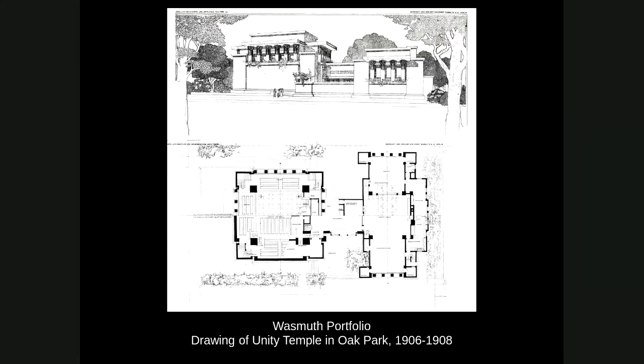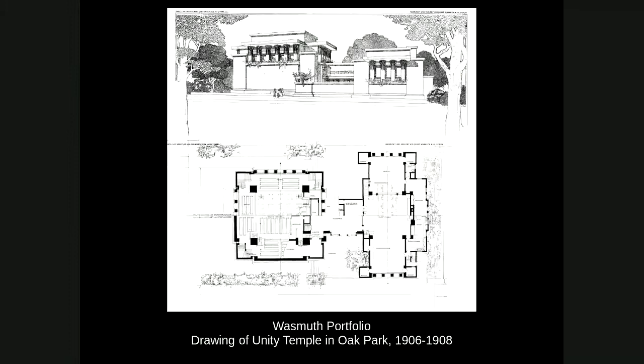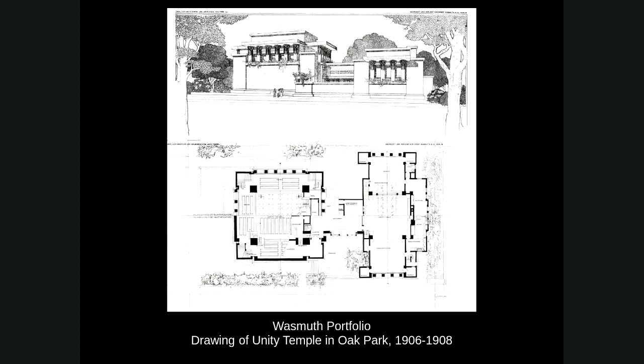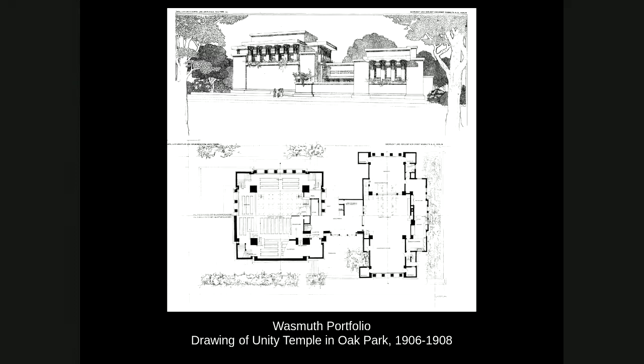Here is the print for Unity Temple. Unity Temple especially was very influential to the architects who looked at the portfolio. Some of the houses may have seemed a little over-decorated for them, but this geometric massing, the cast-in-place concrete, and the space planning really fascinated them. In the last lecture, Marcello pointed out visual similarities between the Viennese Secessionist hall and Unity Temple — that raw geometric massing and simplification of ornament and decoration on display.